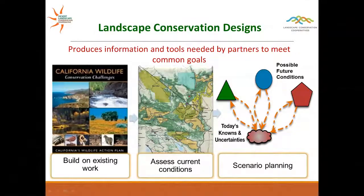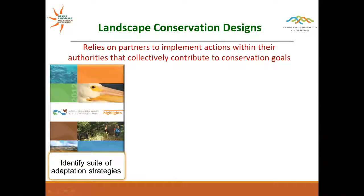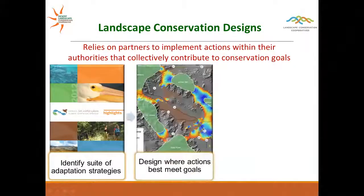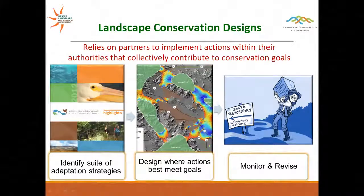We use the process to assess current conditions of the landscape conservation design area, and integrate scenario planning to look at possible future conditions — including factors like climate and urban development. Landscape conservation designs rely on partners to implement actions that collectively achieve conservation goals across agencies. We identify a suite of adaptation strategies, figure out where those actions can be put on the ground to best meet the goals, and use an indicator and assessment framework to build in adaptive management for monitoring and revision.